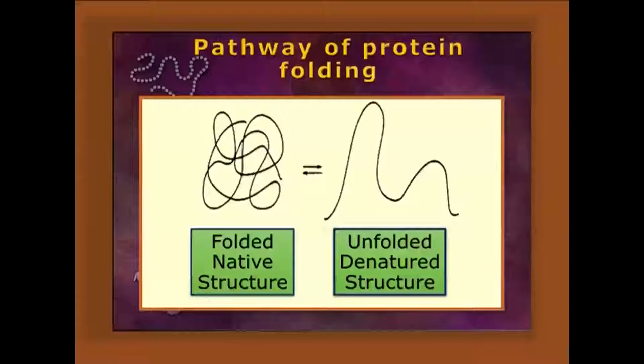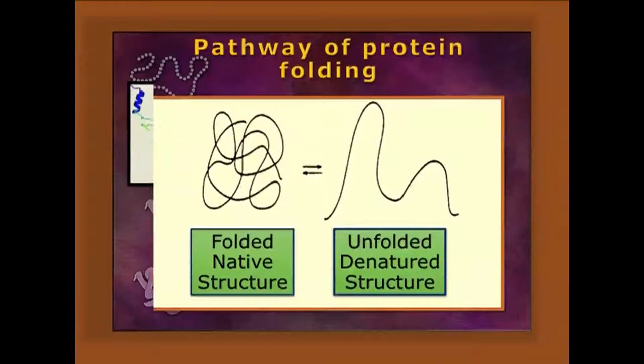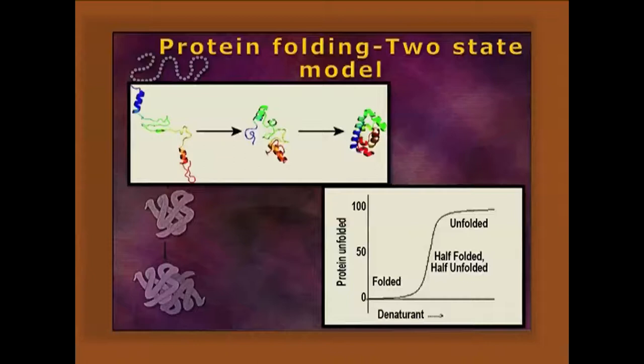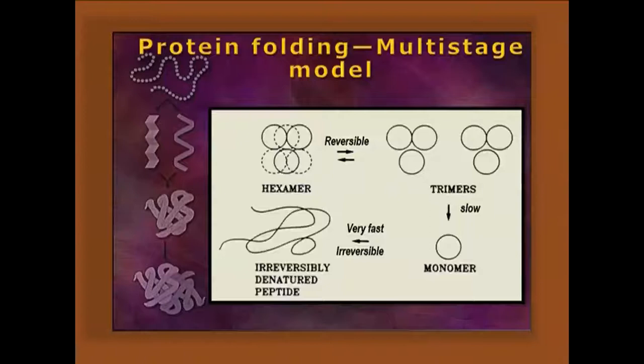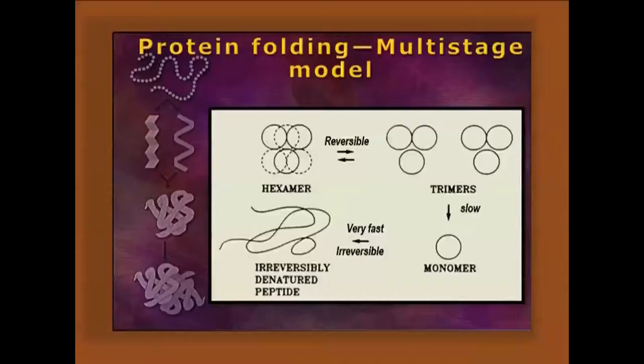Regarding the pathway of protein folding, a protein can be folded in either the two-state model or multistage model from folded to unfolded structure. In the two-state model, there is a sharp transition within a single relaxation type and temperature-dependent process. In the multistage model, there are different types of interactions. The quaternary structure is monitored by light scattering and polypeptide chain formation is monitored by CD spectrum. In glutamate dehydrogenase, from hexamer to trimer the process is reversible, but from trimer to monomer in the native conformation it is irreversible.